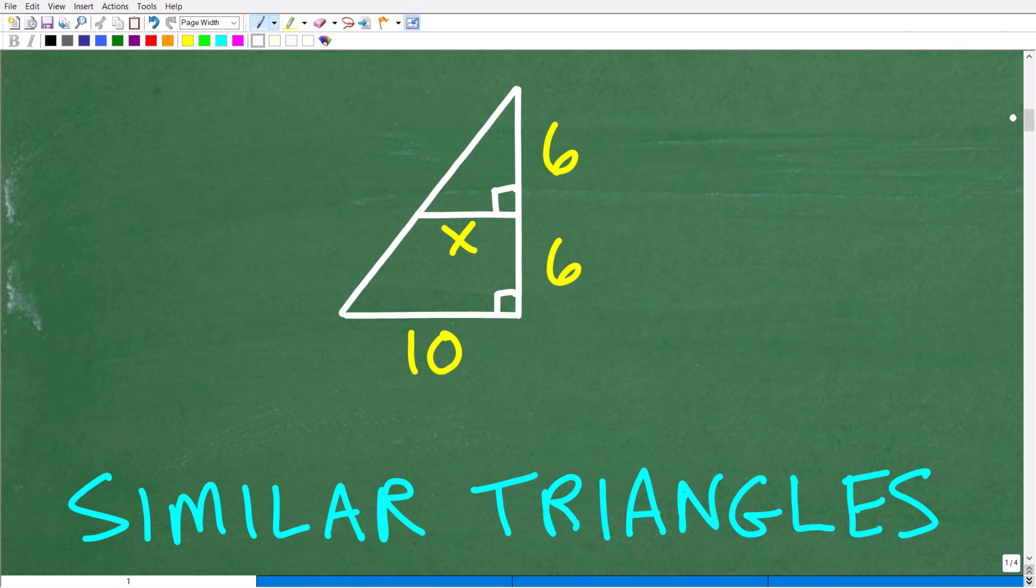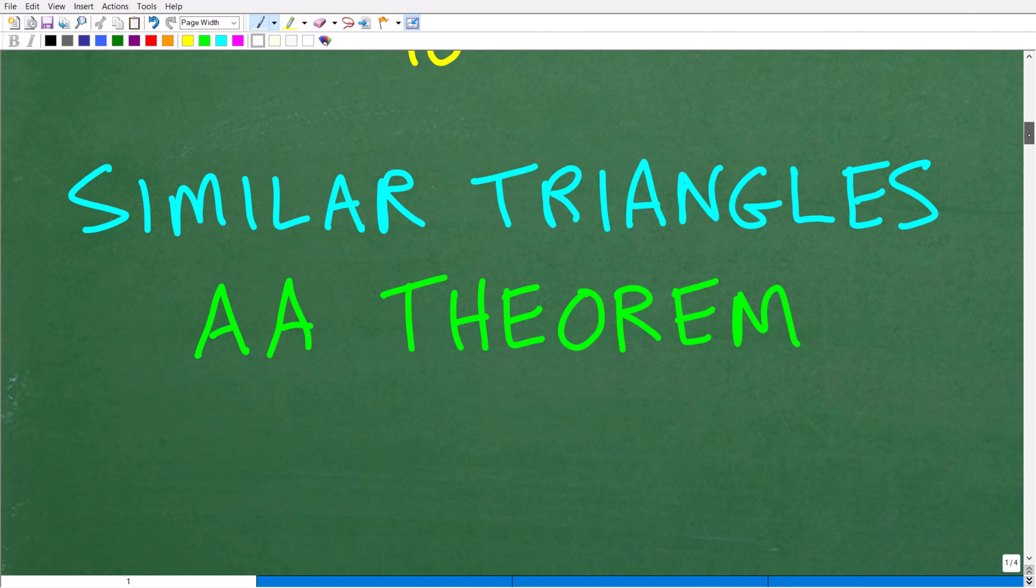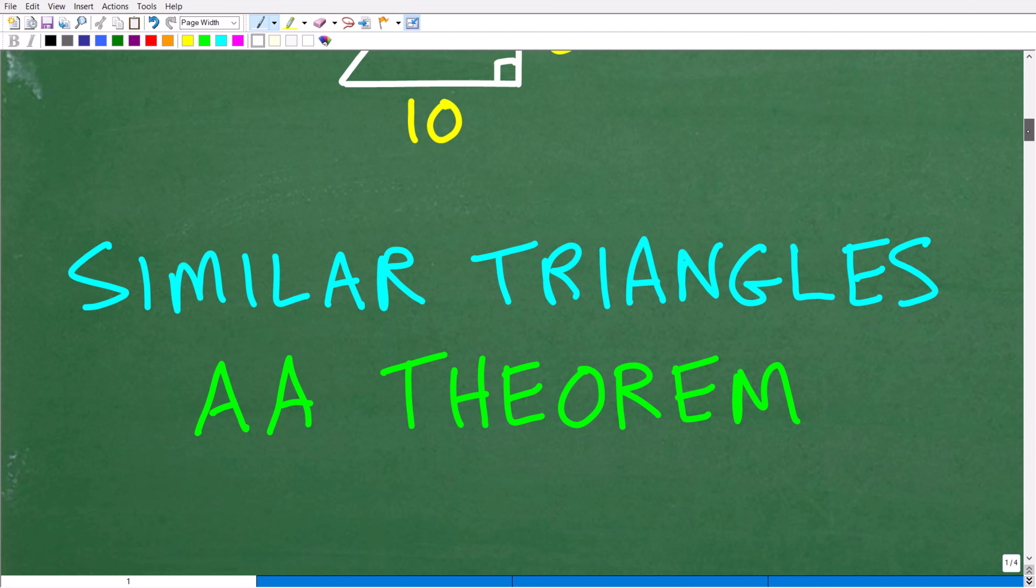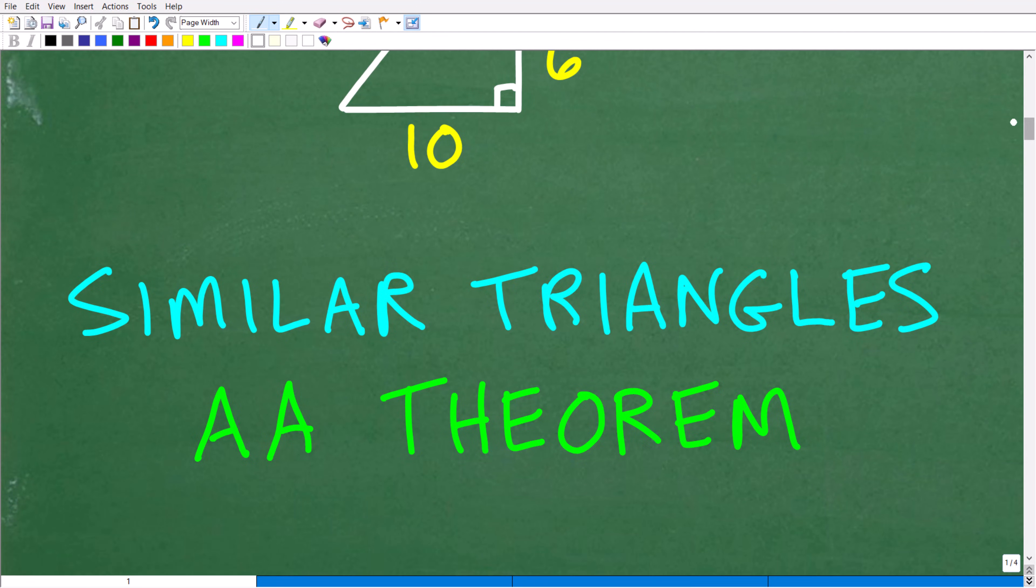So what is a similar triangle? I'm going to show you that in a second. And this is the first thing we need to know, that we're dealing with similar triangles. The second thing is that we need to understand this specific theorem, the AA theorem. Now, there's probably other ways we can approach this. I'm going to use this theorem here.